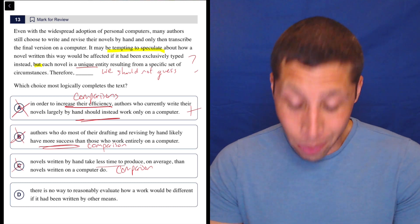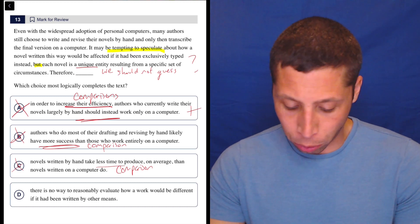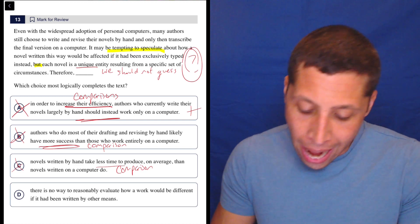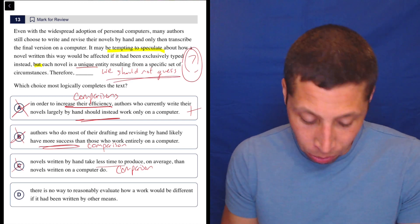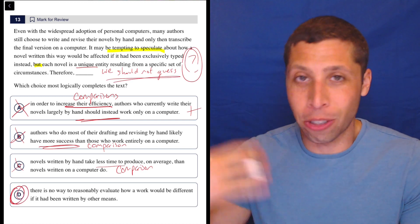D, there is no way to reasonably evaluate how a work would be different if it had been written by other means. Yeah, that's what we said. Like we shouldn't guess. We don't know. We don't know anything. So this is literally just repeating that idea.